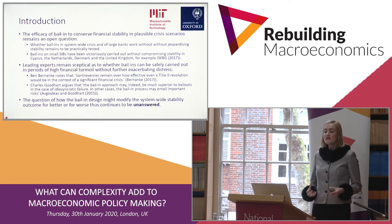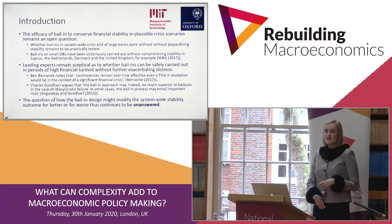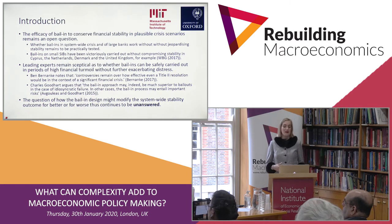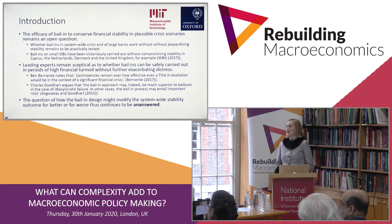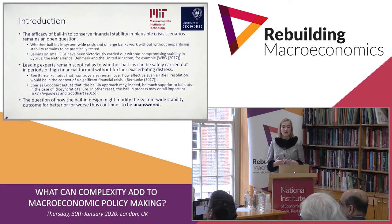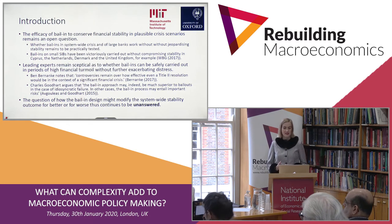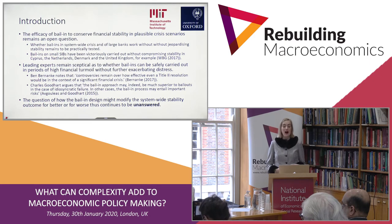The efficiency of bail-in to actually preserve financial stability in plausible crisis scenarios still remains an open question today. While small, systemically important banks have sometimes been bailed in without causing large contagion, bailing in large systemically important banks in times of system-wide distress has still not been done, and it's not clear that it could be done without causing large contagion. Ben Bernanke notes that controversies remain over how effective even a Title II resolution would be in a financial crisis. Charles Goodhart argues that bail-in may be superior in idiosyncratic bank failure, but in many other cases it may entail important risks.